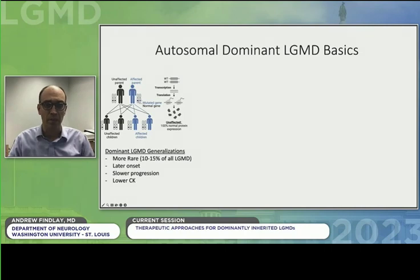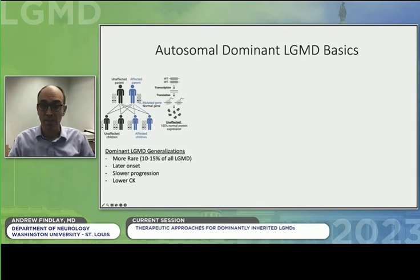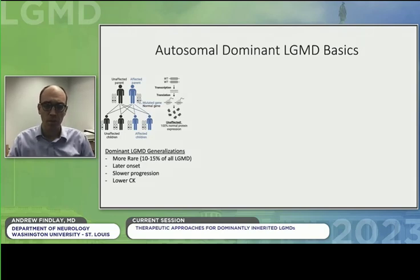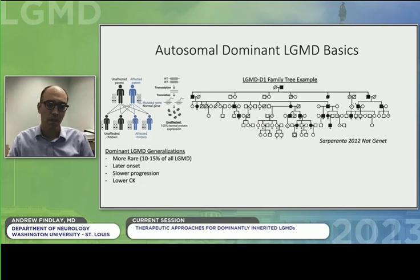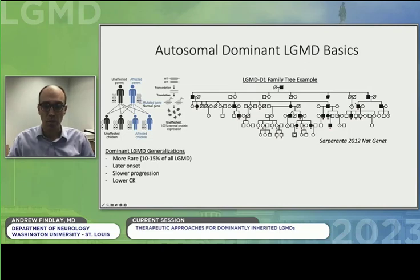The dominance refers to the inheritance pattern for this set of disorders. For non-sex chromosomes, everyone has two sets of genes. For a recessive disorder, you have to have two bad copies of a gene in order to cause disease, whereas dominant disorders only require one. This means that an affected individual has a 50% chance of passing on the bad gene to their children. Some rough generalizations can be made about the dominant limb girdles: they occur less frequently, about 10 to 15 percent of all limb girdles; they have lower CK levels compared to recessive forms; they are more often adult onset disorders; and their weakness progresses more slowly over time. Because affected individuals are usually in good health at reproductive age, this commonly results in extensive family trees with many affected individuals where the disease gets passed down from generation to generation. This is an example of a family with limb girdle muscular dystrophy type D1 where affected individuals are shaded dark.